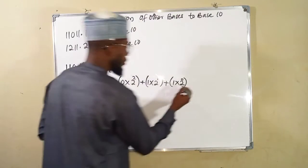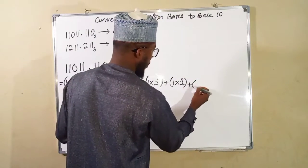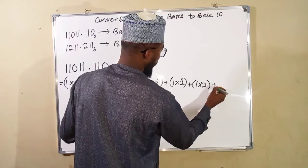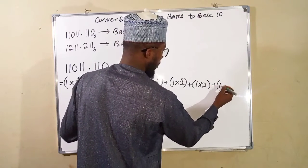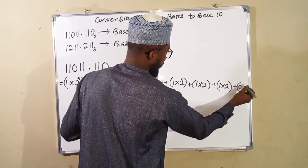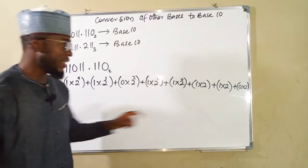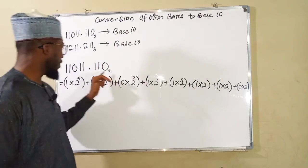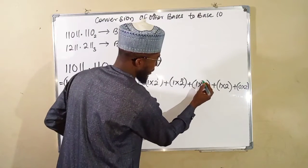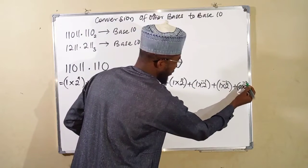Then we move on. Plus 1 times 2, plus 1 times 2, plus 0 times 2. So we assign the index from the first digit after the decimal point: minus 1, minus 2, and minus 3. This is how to do that.